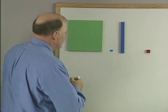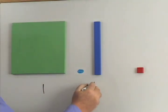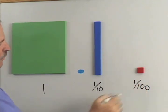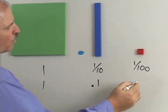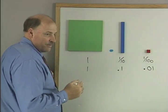So let's write these down. This is one, this is one-tenth, this is one-hundredth, or this is one, this is point one, this is point zero one, right?